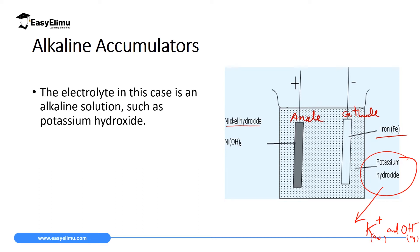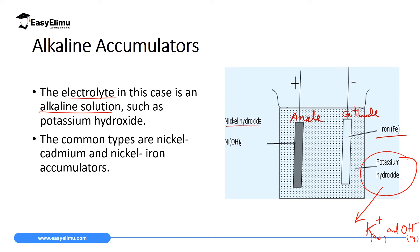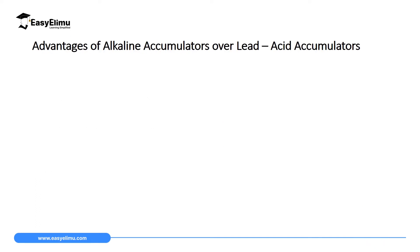The electrolyte used is a strong alkaline solution. Remember from your chemistry that alkaline means a base, such as potassium hydroxide. We can also use sodium hydroxide solution since it is soluble. The common types of these alkaline accumulators are the nickel-cadmium accumulator and the nickel-iron accumulator. We will now look at the advantages and disadvantages of alkaline accumulators over lead acid accumulators.